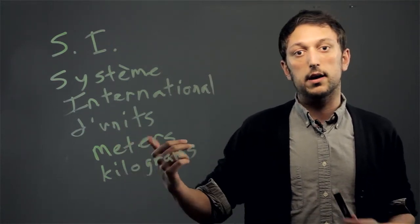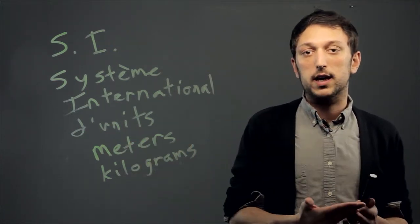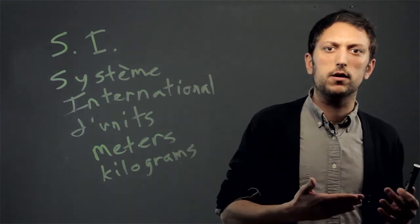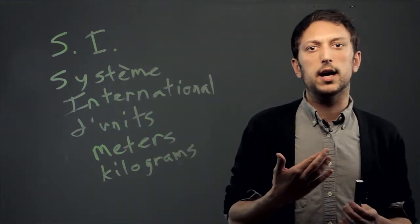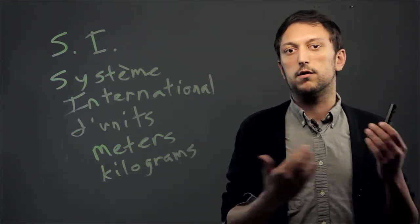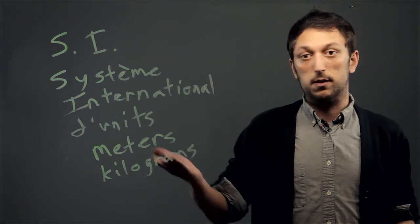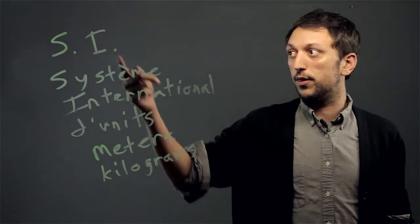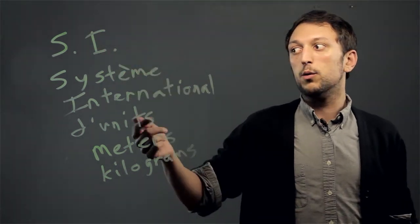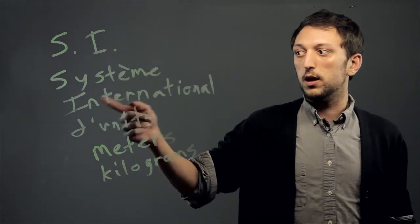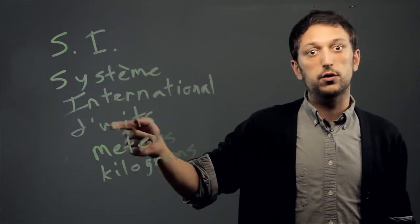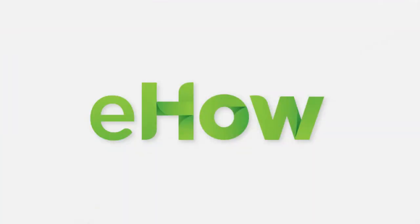Whereas in the United States we have a foot which is 12 inches and a pound which is 16 ounces. The rest of the world seems pretty comfortable with SI, which is Système International d'Unités.